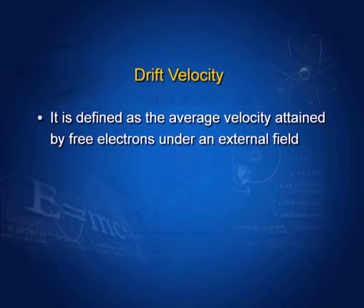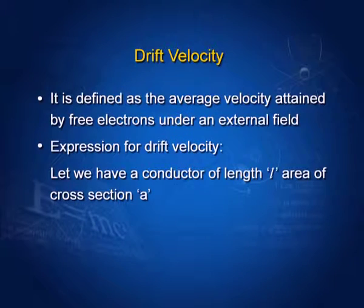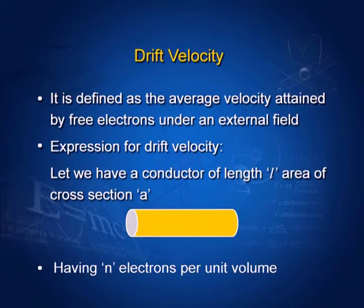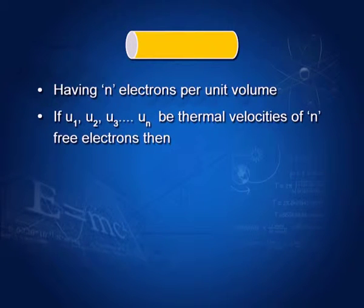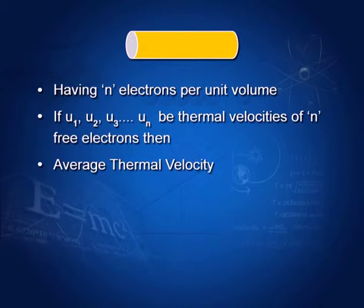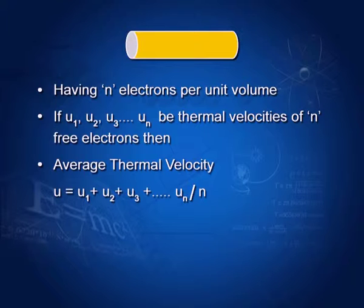Drift velocity is defined as the average velocity attained by free electrons under an external field. For the derivation of drift velocity, consider a conductor of length L, area of cross section A, having N electrons per unit volume. If U1, U2, U3, ... UN be the thermal velocity of N free electrons, then average thermal velocity U equals (U1 + U2 + U3 + ... + UN) divided by N.